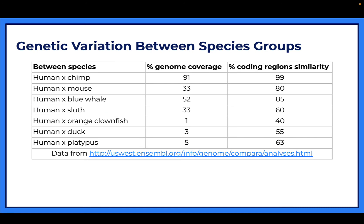Next, we're going to compare using a chart with more information on different species. The genetic variation between humans and chimps - looking at the percent of the genome - shows humans and chimps share 91% of their genome. But there's also the percent of coding regions that are similar, which is a bit different.